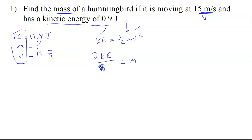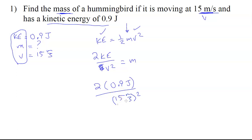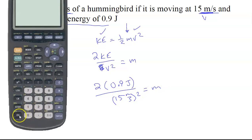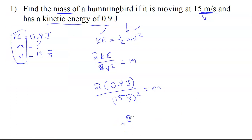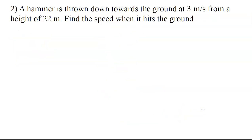Two goes up top and there's the v squared. We put the numbers in — two times 0.9 divided by 15 squared — and we get 0.008 kilograms, or eight grams. I looked up the mass of a hummingbird and built this problem backwards. Eight grams — that's crazy.